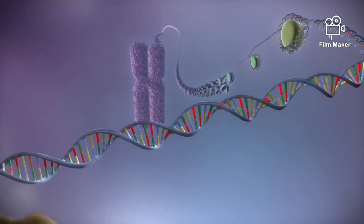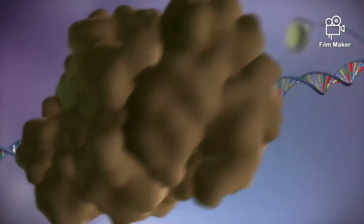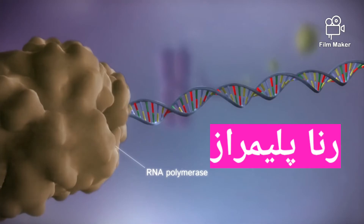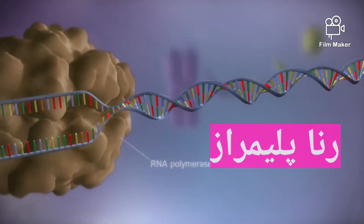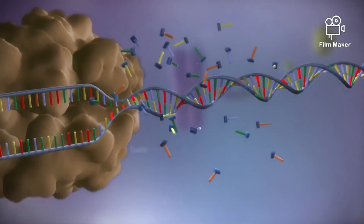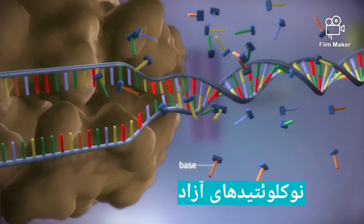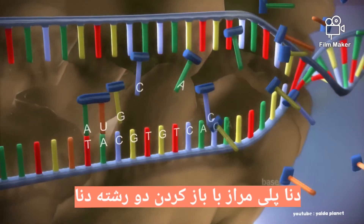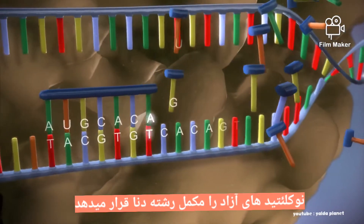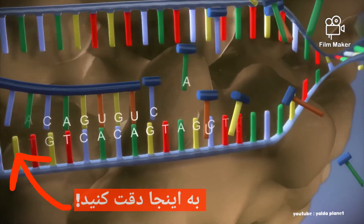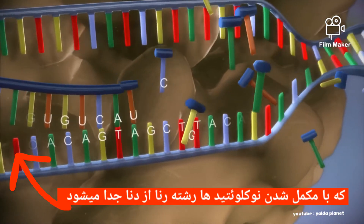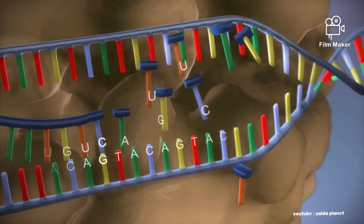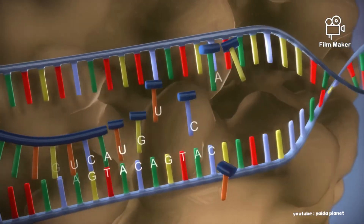When a gene is switched on, an enzyme called RNA polymerase attaches to the start of the gene. It moves along the DNA, making a strand of messenger RNA out of free bases in the nucleus. The DNA code determines the order in which the free bases are added to the messenger RNA. This process is called transcription.